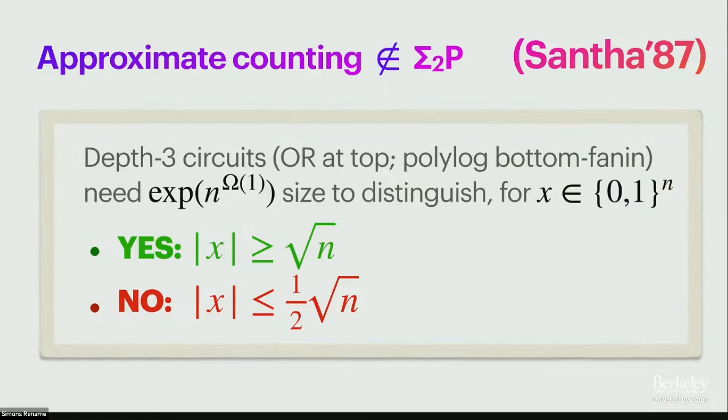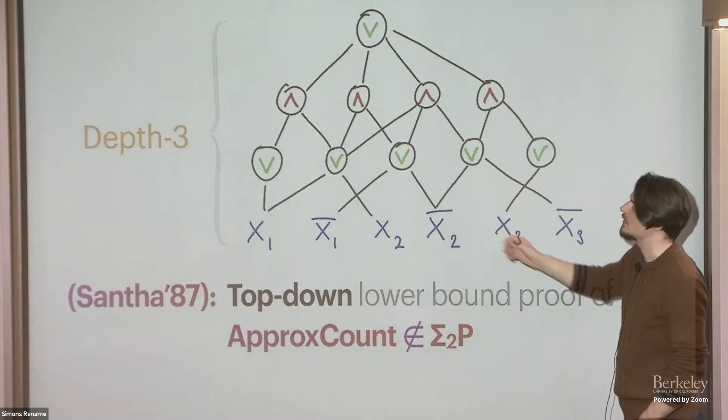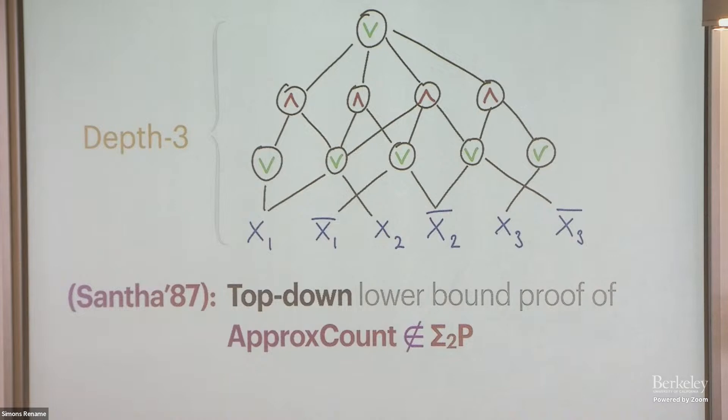So these circuits should not be able to do approximate counting of the Hamming weight of the input. So if I give you an n-bit string and you have to distinguish between whether the Hamming weight is at least root n or at most half root n, there's like a constant factor gap in these two cases. So it's a partial promise problem. And what's interesting about his proof is that it's proved using what's called a top-down method. So here's the depth-three circuit you want to prove a lower bound for. As I promised, there's an OR gate at the top. So you can think of the circuit as an OR of CNFs, CNFs of low width.